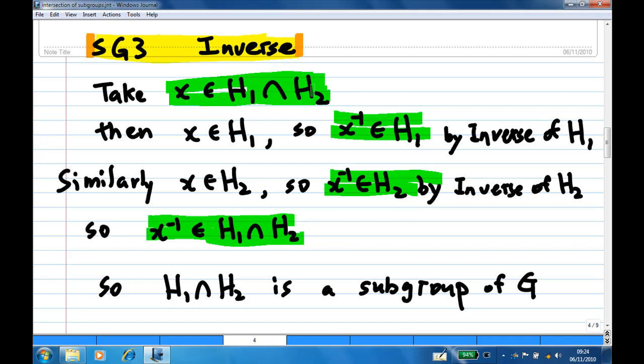If all these three properties, SG1, SG2, SG3 are satisfied, so we conclude H1 intersect H2 is a subgroup of G.